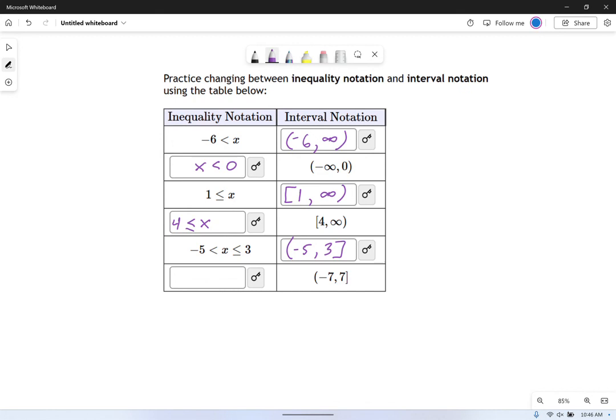And the last one, x is between negative 7 and 7. Well, I write it this way. x is between negative 7 and 7, and because it could actually equal 7, positive 7, I put a less than or equal to on that one to indicate that it's inclusive. x is between negative 7 and 7.